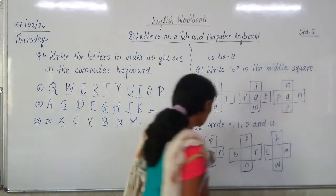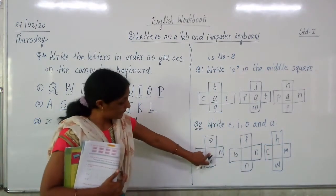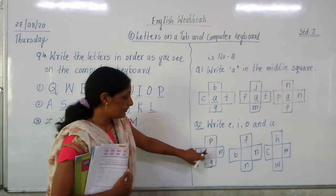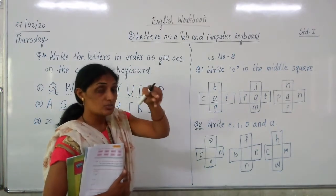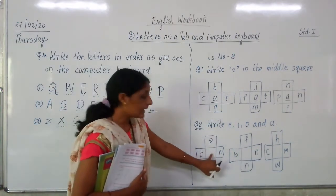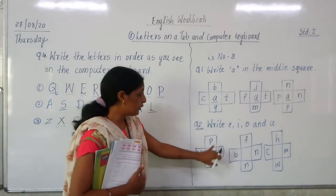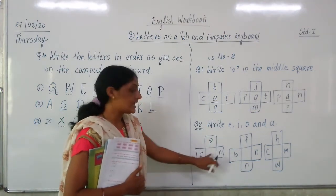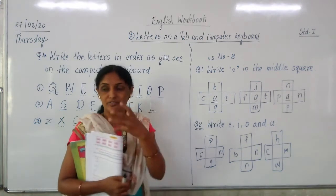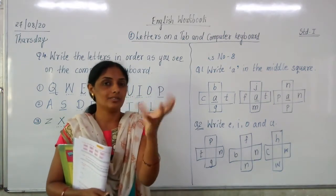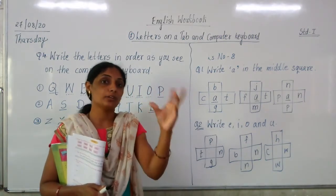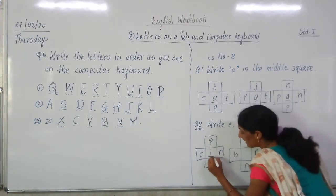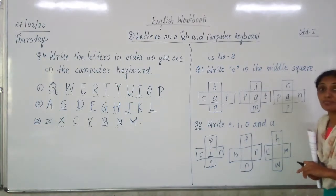Now which letter can you write in the middle square? If I write I, what words will become? We have already done it in the English book. If I write the vowel I in the middle, what word will become? T-I-P — yes, it is a meaningful word. T-I-N-T. A tin in English means a dabba. So if I write I in the middle square it will make a meaningful word.